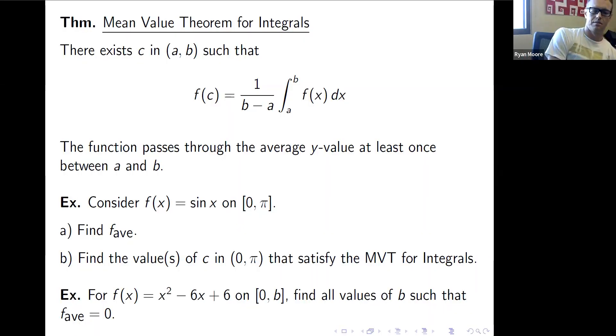Okay, let's do it. Working with our formula for finding f average and also taking into consideration the mean value theorem for integrals. Let's look first at that example there. Consider f of x equals sine of x on 0 to pi. Let's find f average and let's also find the value or values of c in 0 pi that satisfy the MVT for integrals.